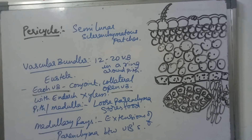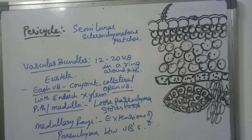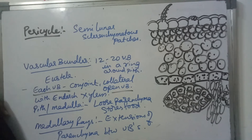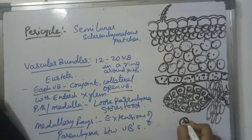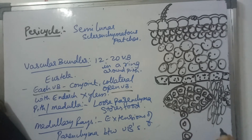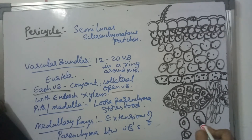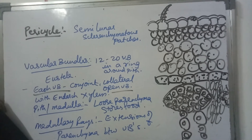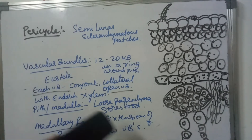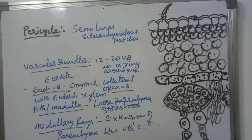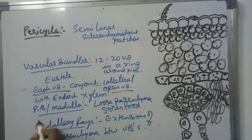The xylem present in dicot stem is endarch xylem. Endarch means protoxylem is towards the center and metaxylem is towards the periphery. This type of xylem is called endarch xylem.